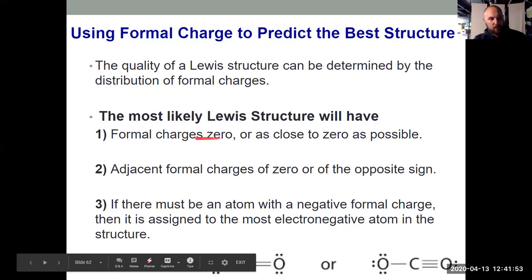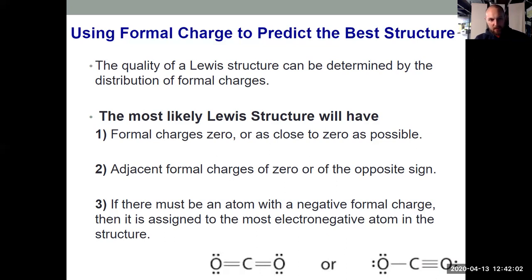Rule one tells me I want the formal charges to be zero if possible. That's only achieved with the Lewis structure that's there on the left with two double bonds, not the one that's on the right with the single bond and the triple bond.